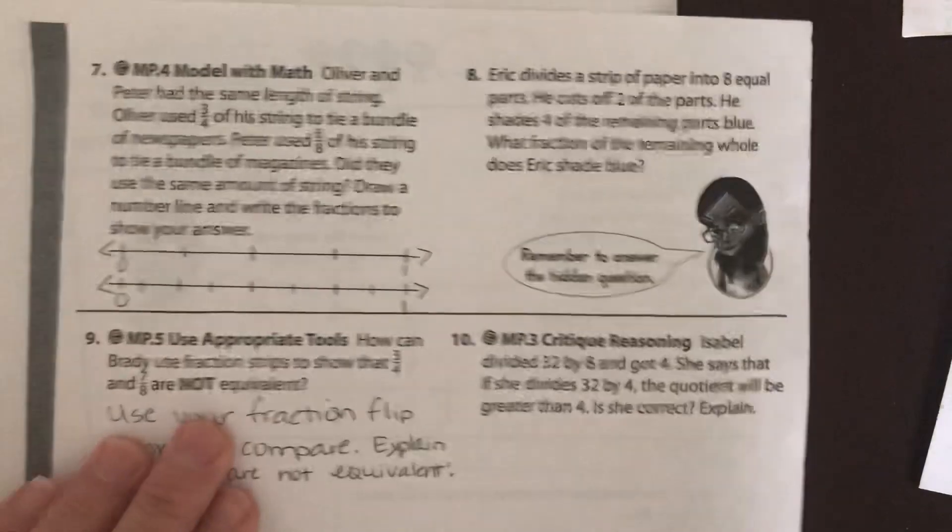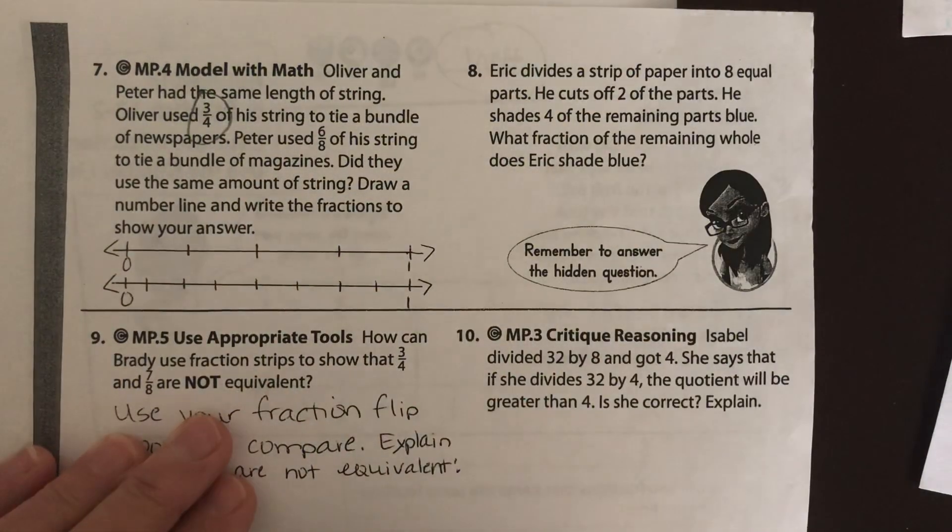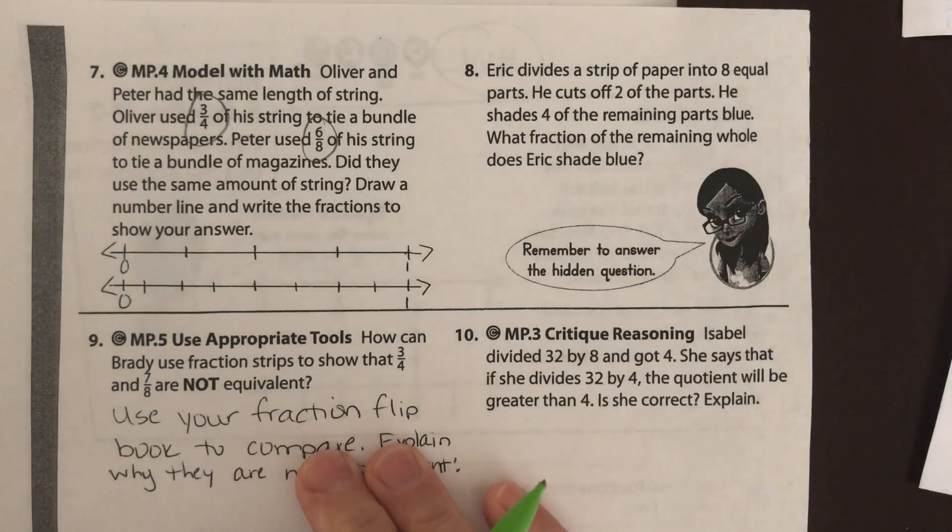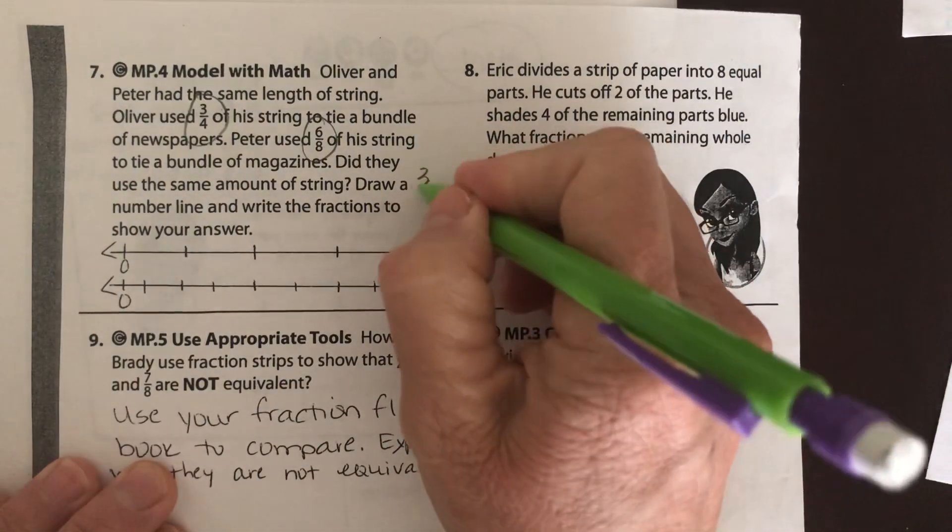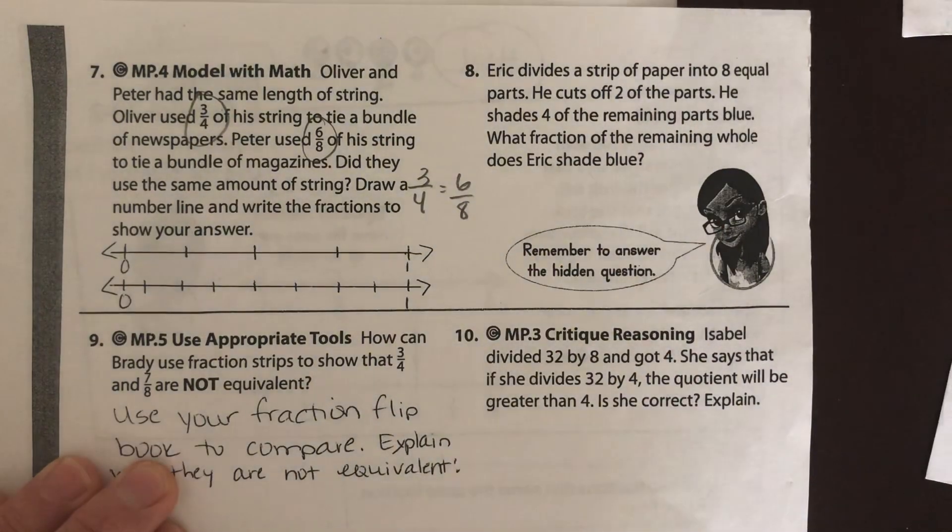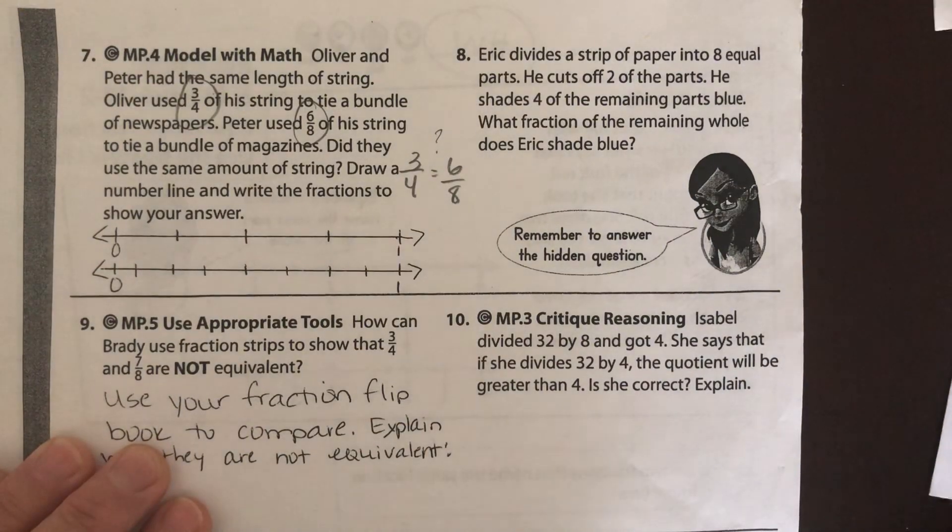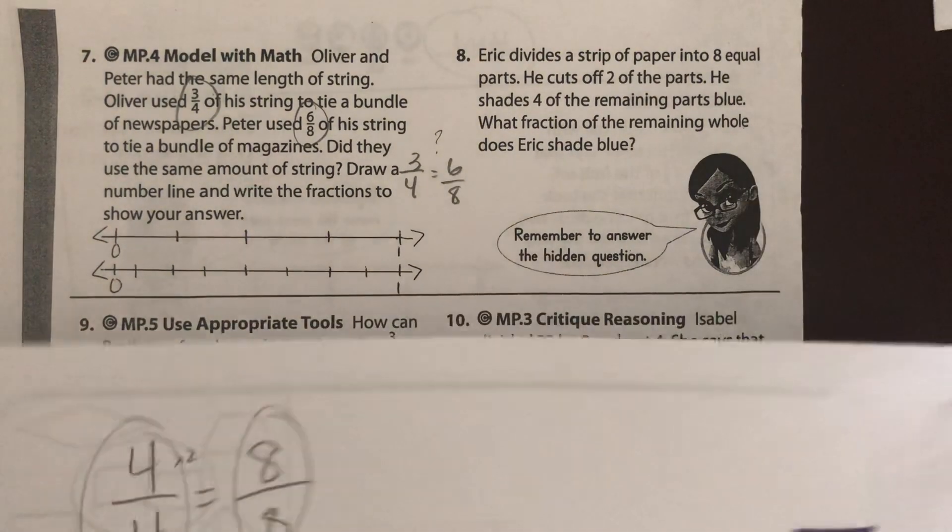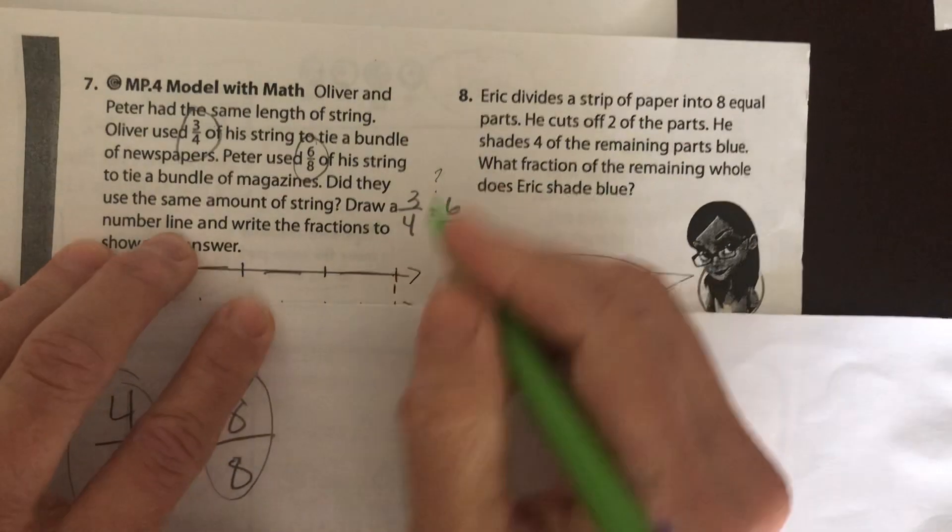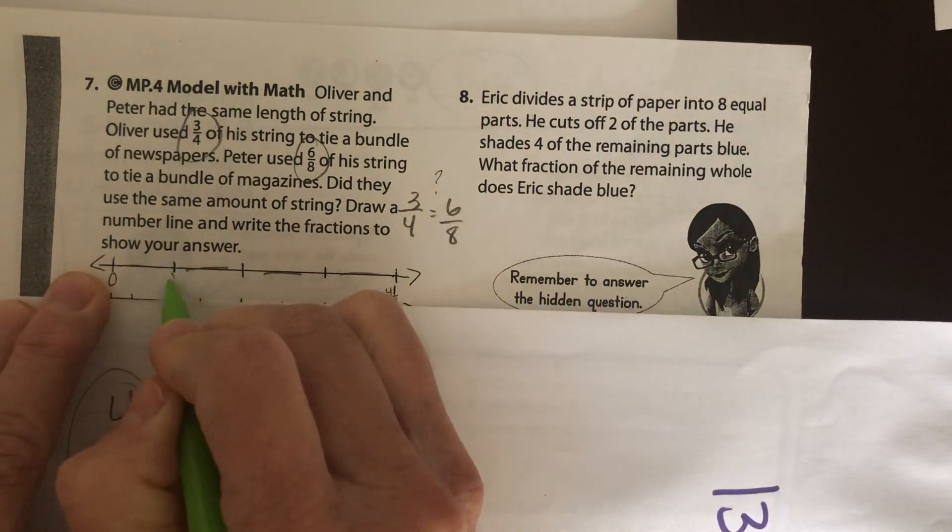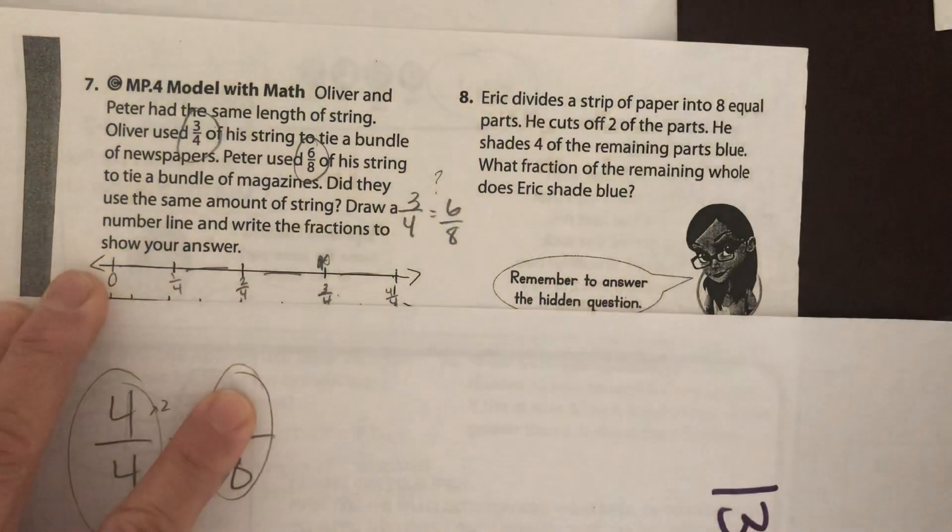All right, let's go back, look at the back. All right, number seven. Oliver and Peter have the same length of string. Oliver used 3-4ths of his string to tie a bundle of newspapers. Peter used 6-8ths of his string to tie a bundle of magazines. Did they use the same amount of string? So basically, they want to know, is 3-4ths equivalent to 6-8ths? That's what they want to know. Did they use the same amount of string? Draw a number line and write the fractions to show your answers. So we're going to ignore this bottom number line here. And we have one, two, three, four different sections. So we know that this is 4-4ths. Which makes this 1-4th, 2-4ths, and 3-4ths. And we are looking at 3-4ths is how much string Peter used.